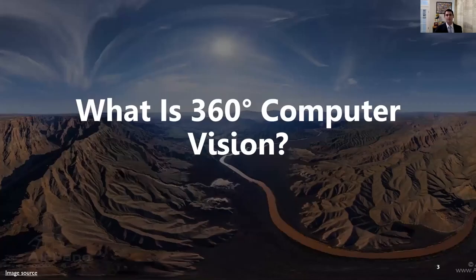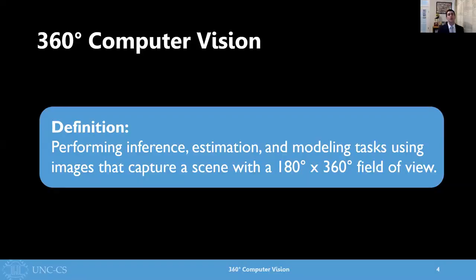Well then, let's get right into it. So, what is 360 computer vision? For the purposes of today's talk, we're going to define 360 computer vision to be performing inference, estimation, and modeling tasks using images that capture a scene with a 180-degree by 360-degree field of view. For the sake of simplicity, I'm going to simply refer to this as a 360 field of view.